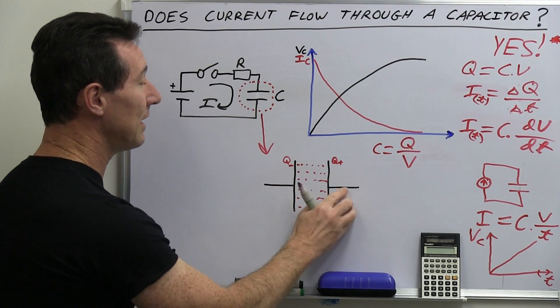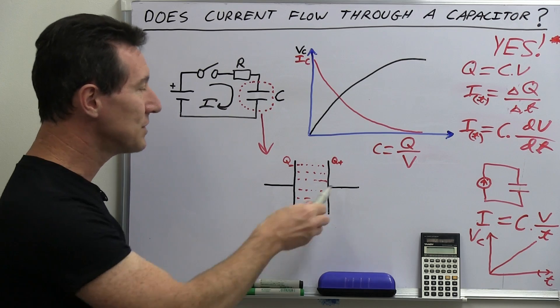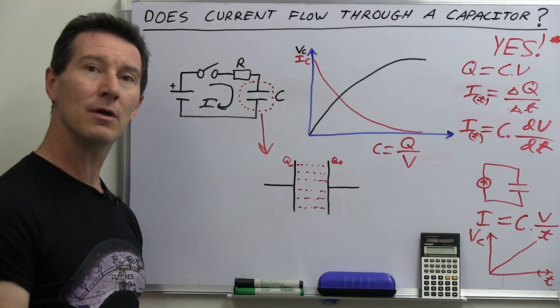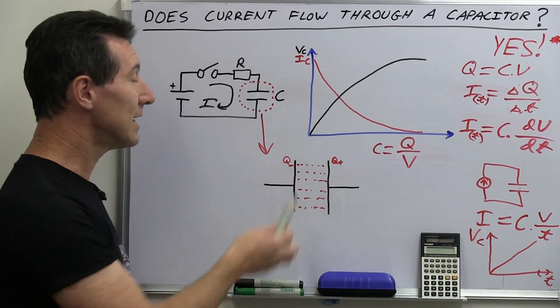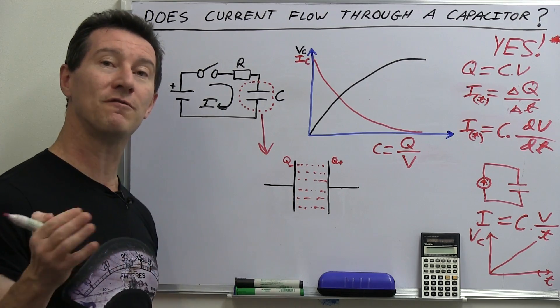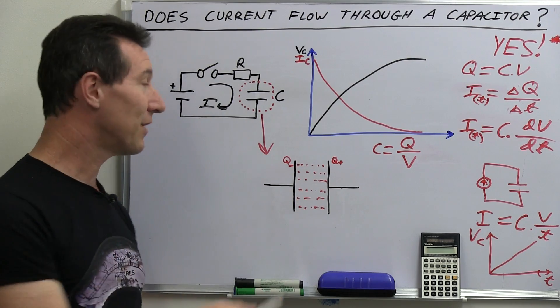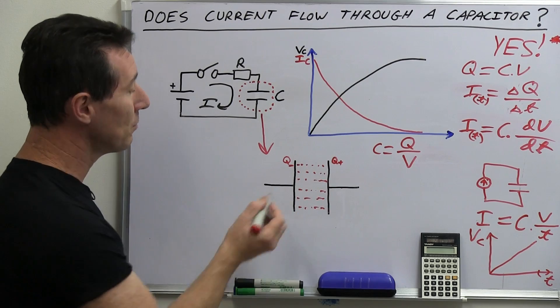But we're just going to ignore that because that's just going to confuse the issue. No electrons actually pass through a capacitor like this. It's just a capacitor is just defined in terms and understood in terms of electric charge building up on the plate.